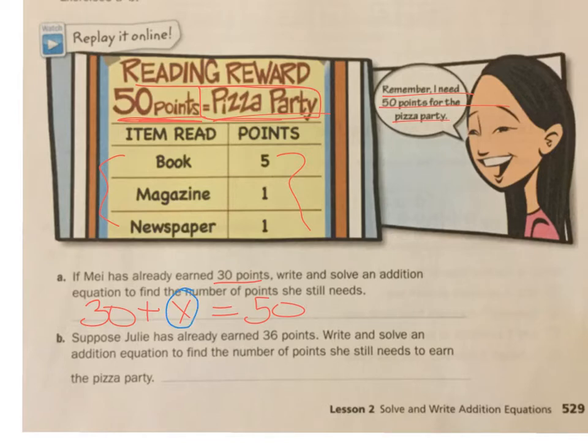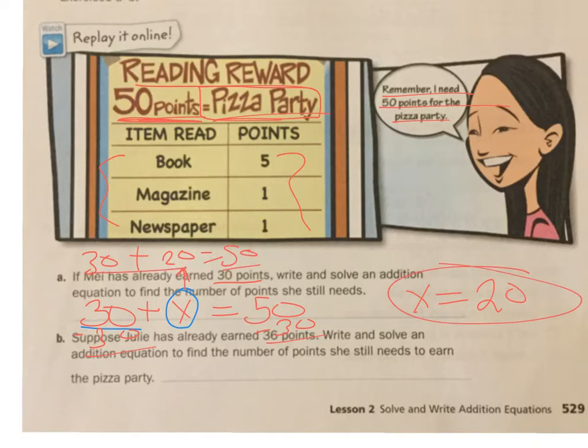So I want to get this X all by itself. And to do that, I have to get rid of this 30. So I'm going to subtract 30 from this side and subtract 30 from this side, because I want to be fair and equal. 30 minus 30 is 0. So that's going to leave me with X equals 50 minus 30 is 20. And then if I plug it back in, so 30 plus X, I think is 20, equals 50. 30 plus 20 does equal 50, and so this is the correct answer. So this is the addition equation, and that's how I solved for X.